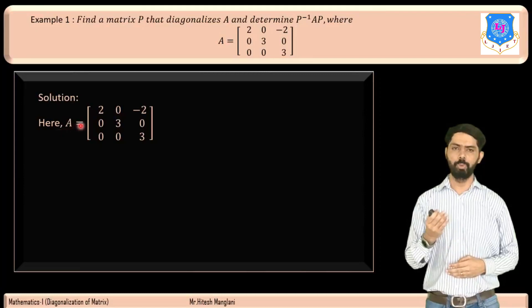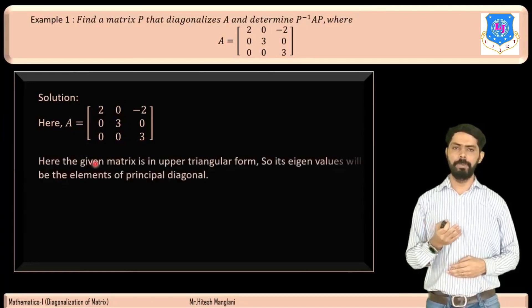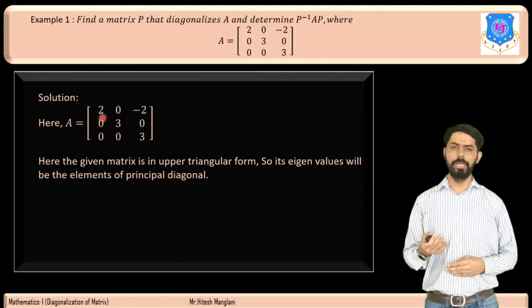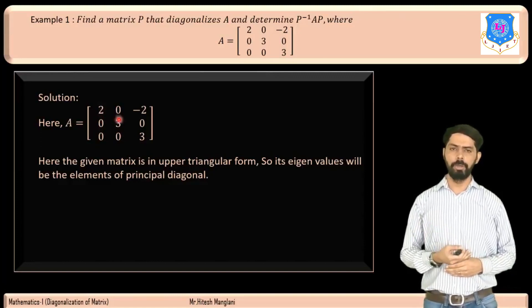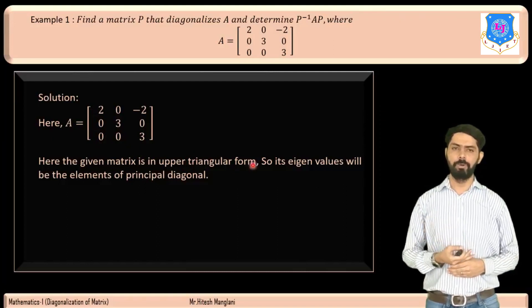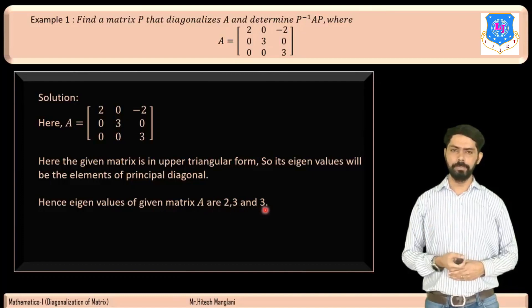Here A = [2, 0, -2; 0, 3, 0; 0, 0, 3]. The given matrix is in upper triangular form because all entries below the principal diagonal are zero. Therefore, the eigenvalues are the elements of the principal diagonal. So the eigenvalues of matrix A are 2, 3, and 3.